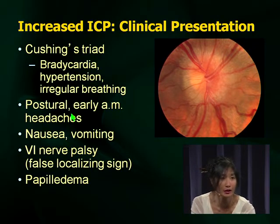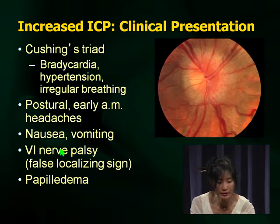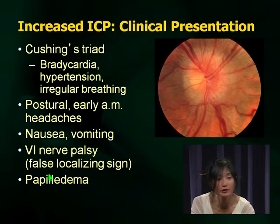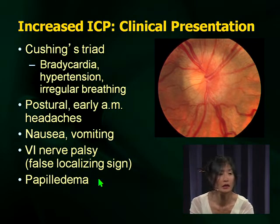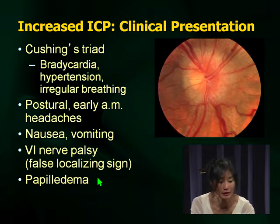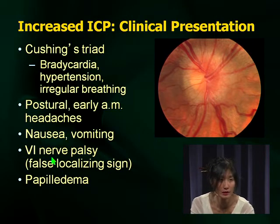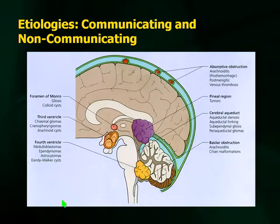Other more subtle signs: on a clinical scenario you may get a child with postural headaches that feel better with lying down and early morning headaches. Another important physical examination finding is sixth nerve palsy, which presents with diplopia. A child may present with diplopia and vomiting — that can be a sixth nerve palsy, and it is a false localizing sign, meaning it doesn't indicate the lesion is in the brainstem; it is due to increased ICP.